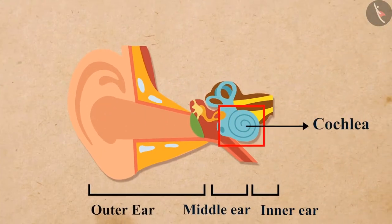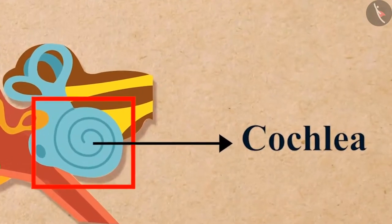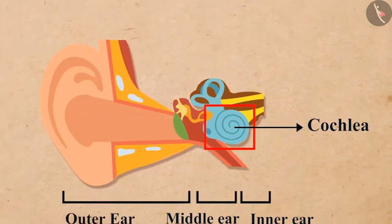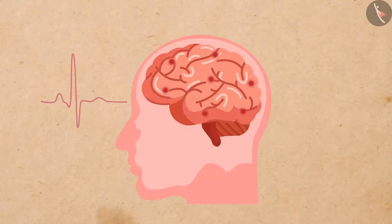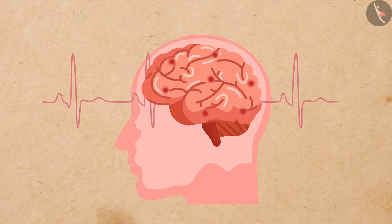The cochlea of the inner ear turns the pressure variations into electrical signals. These electrical signals are sent to the brain through the auditory nerve, and the brain interprets them as sound.